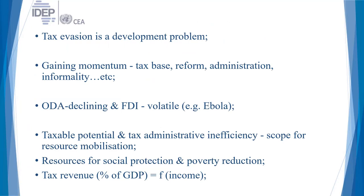Tax evasion is a developmental problem gaining momentum because now we are pushing towards DRM — domestic resource mobilization — tax reform, tax administration, tax efficiency, and having a handle on the informal sector. Overseas development aid and FDI are both declining — this was happening even before COVID, but now it has been dramatic. Therefore, because of that we have to raise our own funds. If we have to raise our own funds, how the degree of compliance in society should be studied and what really drives that degree of compliance needs to be understood.